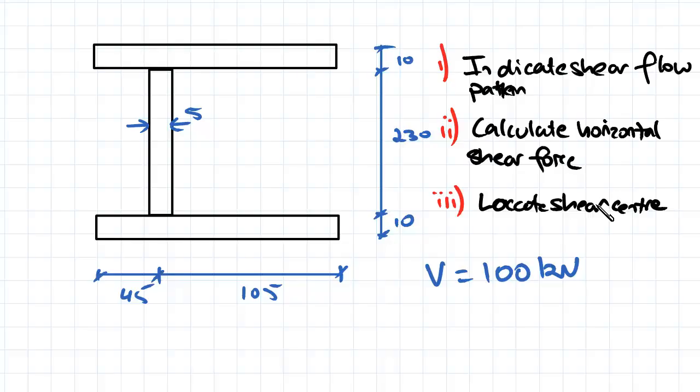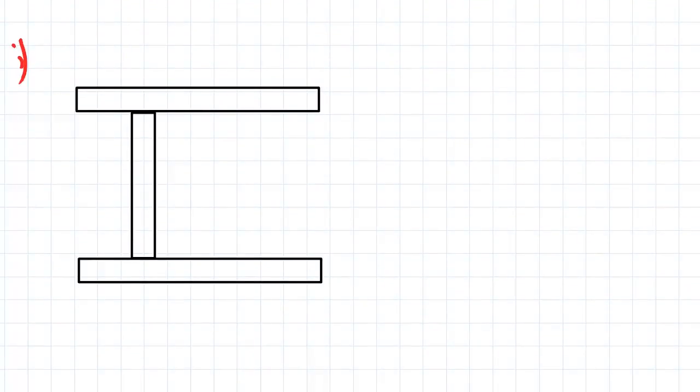The first thing we'll do is we'll indicate the shear flow pattern. So we have a look at our section here. The shear flow is going to start from the edges of our top flange here, moving into the center to the web, then down the web, and then from the web to the edges of our bottom flange there.